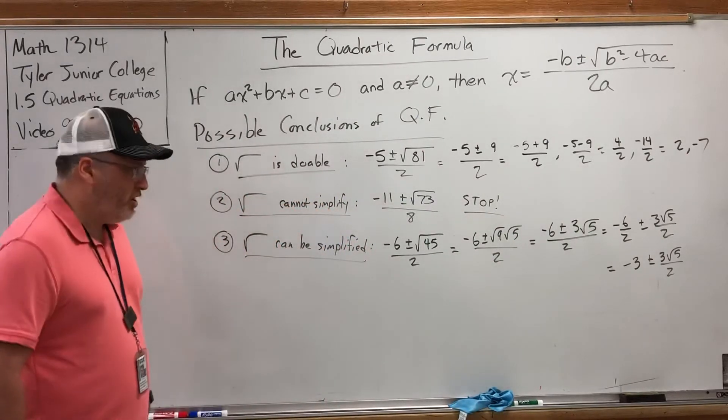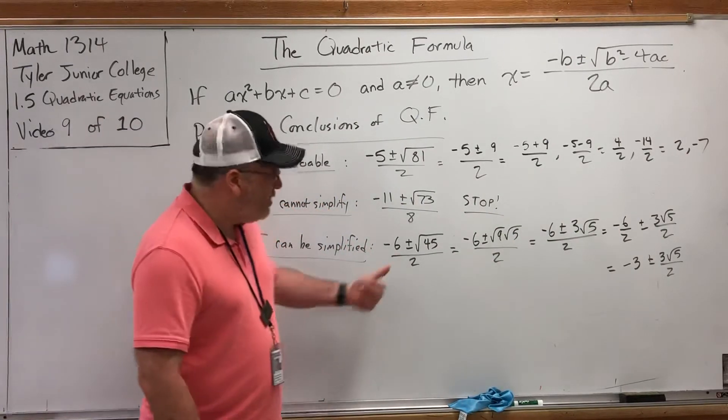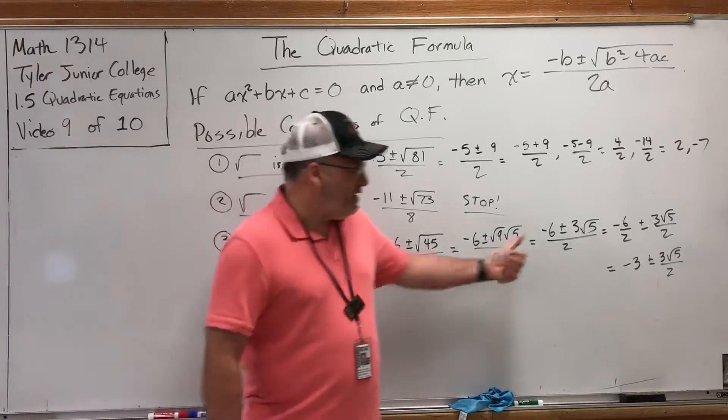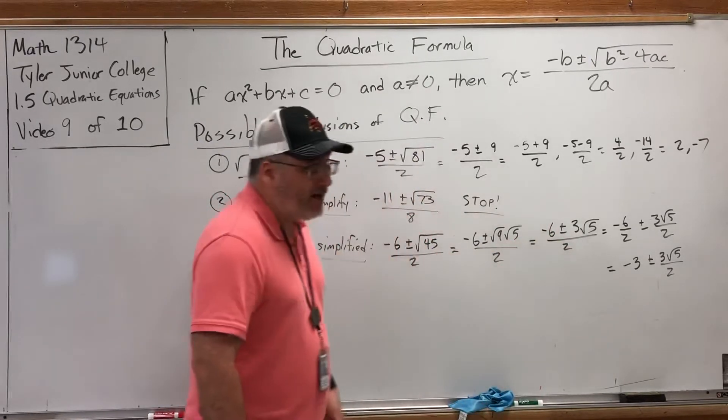Now there's still issues about simplifying the fraction. In this case, I can factor out a 3, but that wouldn't reduce with the 2. However, I can split this into two fractions across the plus minus. Negative 6 over 2 plus or minus 3 square root of 5 over 2. And I can reduce the first fraction and get a solution of negative 3 plus or minus 3 square root of 5 over 2. But my point is, a third type of conclusion with the quadratic formula is a square root that can be partially simplified, but not completely simplified. That to me is the worst case scenario because you have to A, know how to simplify the square root, and B, be on the lookout for simplifying the fraction afterwards.